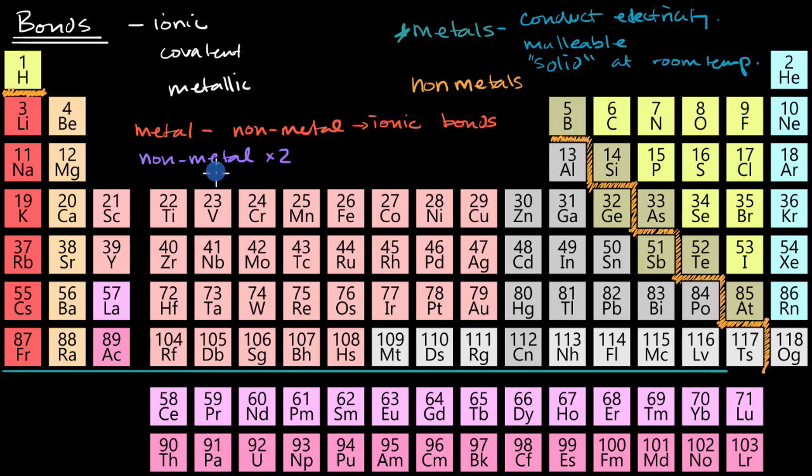Well, we saw that as an example in that first video, where we said, well, what happens if oxygen bonds to oxygen? Well, we saw that was a covalent bond, and that is generally the case. When you have two non-metals form bonds, it is covalent.